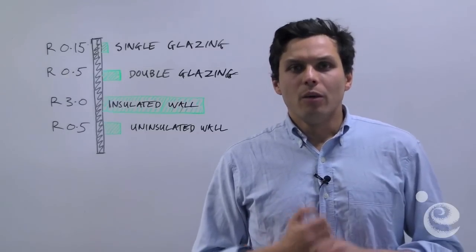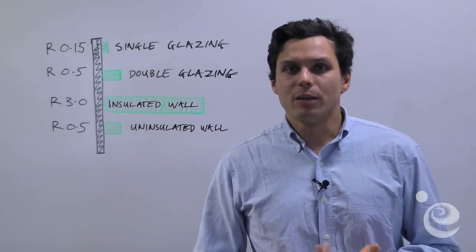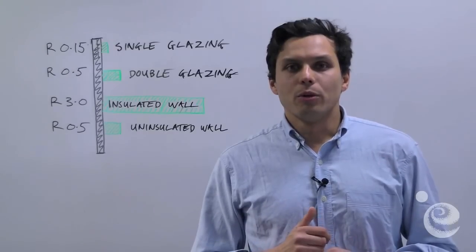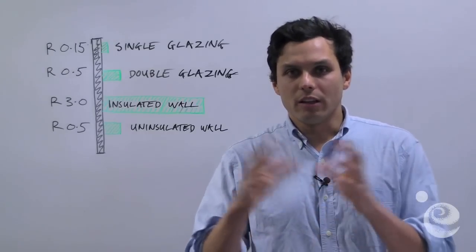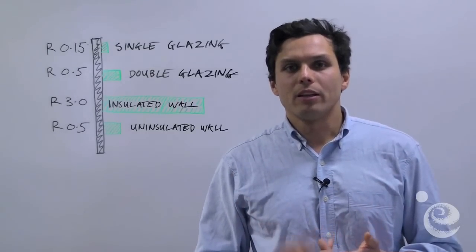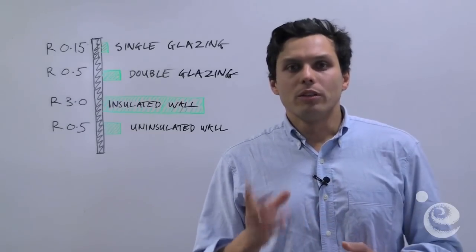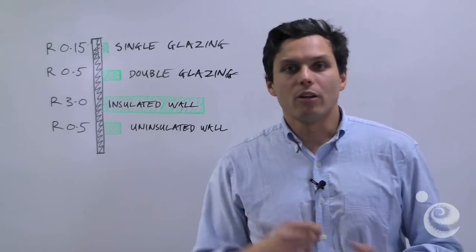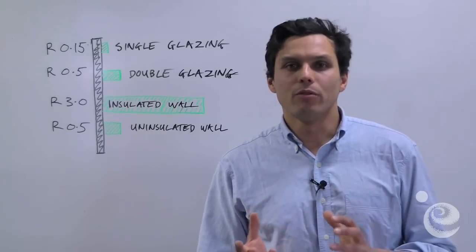Now fact number one: whatever you do, whether it's single glazing or double glazing, windows are always going to be the weakest thermal element in your building. When I say that, I mean compared to a wall, windows are always going to let a lot of heat out during winter and let a lot of heat in during summer, and that can't be avoided.